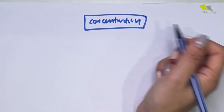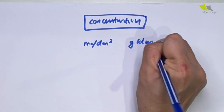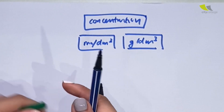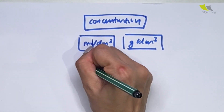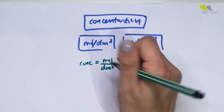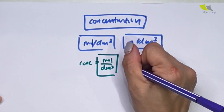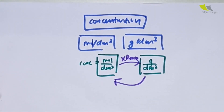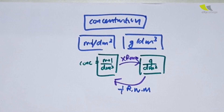When we talk about concentration, the units of concentration are mole per dm³ or gram per dm³. I always tell students — you don't have to remember why, you just need to follow through. Let me show you how to follow through using the units to give you the formula. Concentration equals mole over dm³, or equals gram over dm³. To convert from mole per dm³ to gram per dm³, you multiply by RMM. The opposite — you divide by RMM. We'll be coming back to this many times.